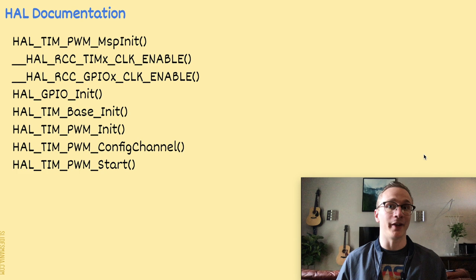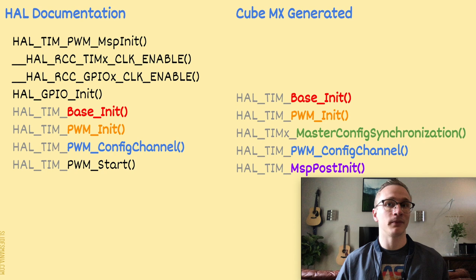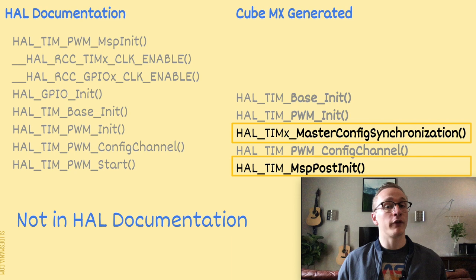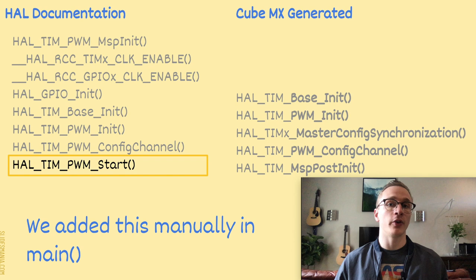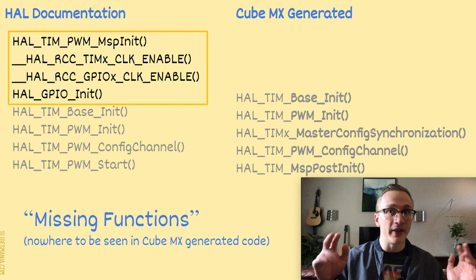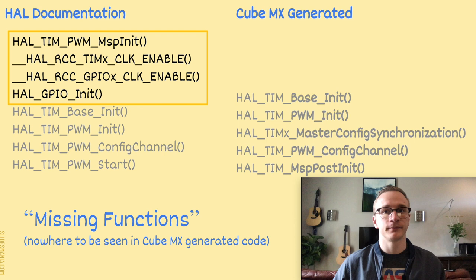Let's compare this side by side with the functions generated by CubeMX. They're not identical, but there is some overlap. What we have highlighted here are things that showed up in the HAL documentation but not in the CubeMX generated code. And over here we have things that were generated by CubeMX but didn't show up in the HAL documentation. The HAL documentation told us to use the PWM start function, and even with CubeMX generated code we had to add that manually in our main method — so it was still required to start the timer. That just leaves us with four missing functions: why did they show up in the HAL documentation but not the generated code?